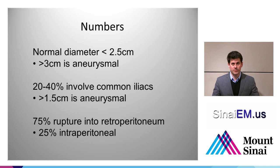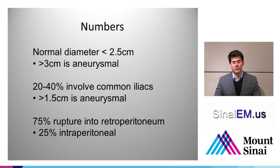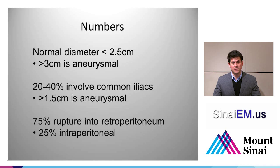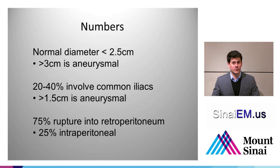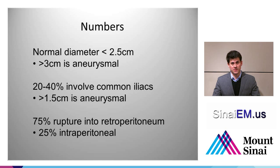What do the numbers look like? Normally the aorta is under 2.5 centimeters. Most authors describe aneurysm as a 50% dilatation in the aortic diameter, and most agree that about 3 centimeters is the cutoff for describing an aorta as aneurysmal. The risk of rupture increases exponentially with size — a 3.1 cm aneurysm is much less concerning than one that's 5 or 6 centimeters. Twenty to 40% of aneurysms involve the iliac arteries; those vessels should be less than 1.5 centimeters.